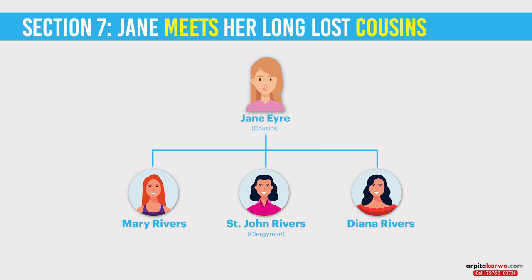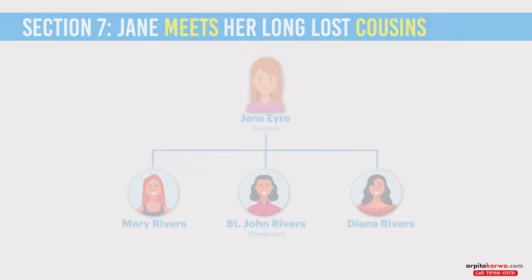And this is not all — there is something more interesting. Jane learns that the same uncle of hers, the three siblings' father, had left £20,000 for her before dying. It's a lot of money. But Jane has a big heart. She decides to share this money with her newfound sisters, Mary and Dinah, and her brother St. John Rivers.